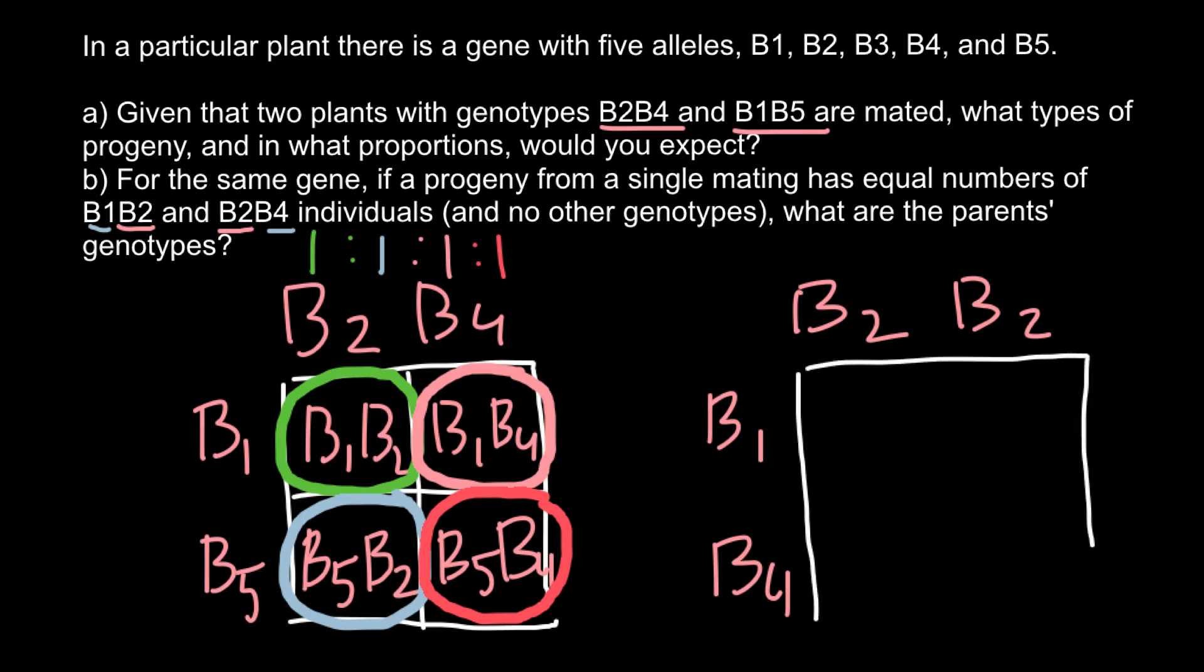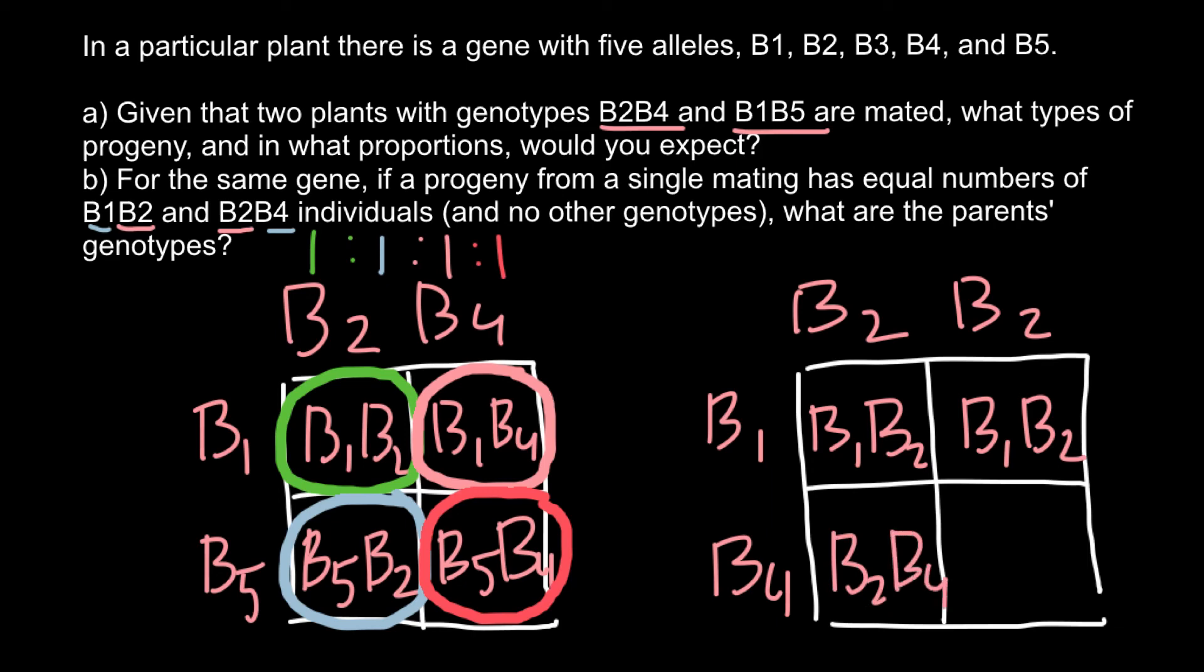When we build a Punnett square once again, let's see what we're going to get. In the following generation, we are going to get B1B2 here, B1B2 here, B2B4 here, and B2B4 here.